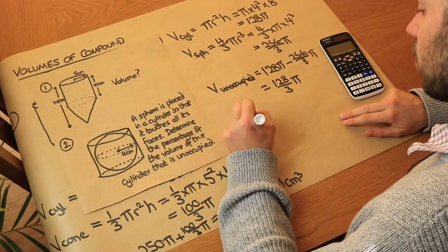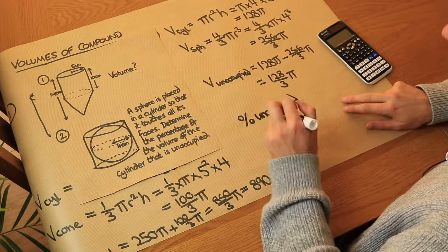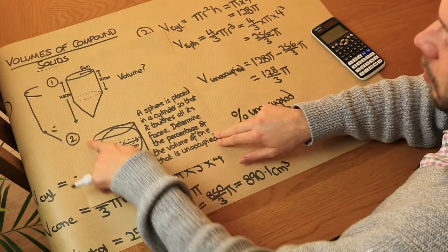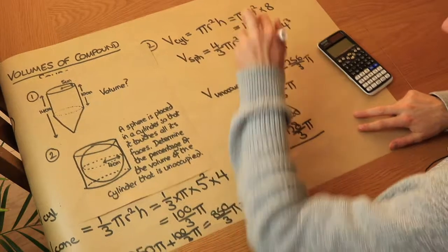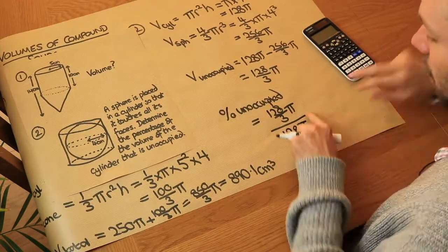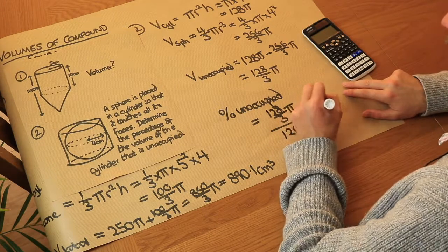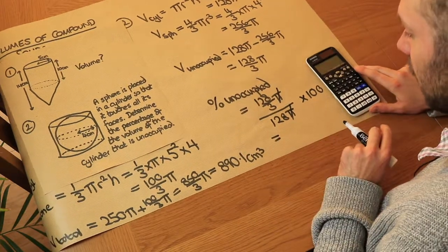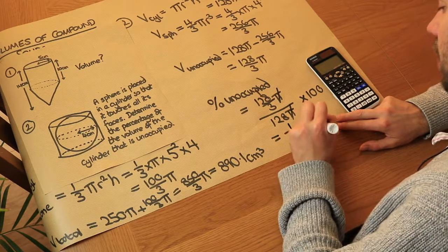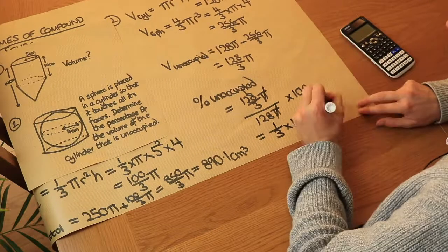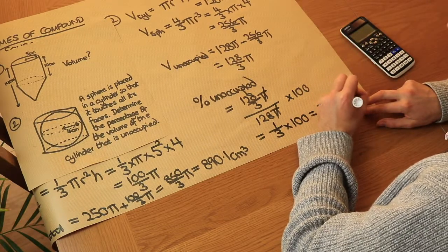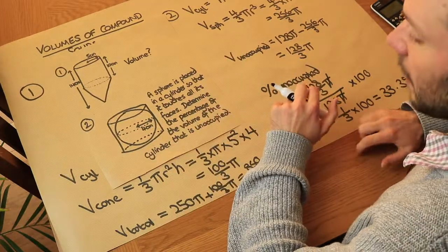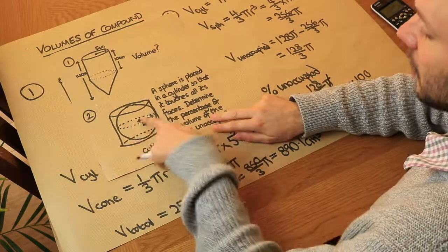The percentage unoccupied is the unoccupied volume, 128/3 π, divided by the total cylinder volume of 128π, multiplied by 100. The π cancels top and bottom, leaving one-third times 100, which gives 33.3%. So a third of the cylinder is not occupied by the sphere, meaning two-thirds of the cylinder is occupied by the sphere.